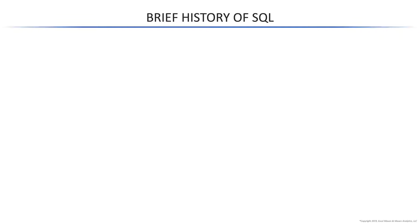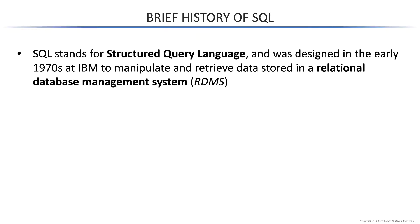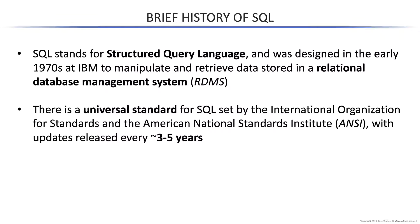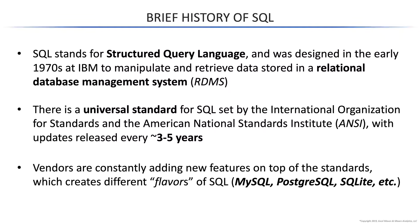Let's talk briefly about how SQL came to be and how it's evolved into the various flavors we see today. The language has been around since the 1970s when it was created to handle the manipulation and retrieval of data stored in relational database management systems. Since then we've developed standards for SQL, which are updated by the major standards boards roughly every three to five years. Vendors are constantly trying to outdo each other by adding new features on top of these universal standards — this is what creates these various flavors of SQL.